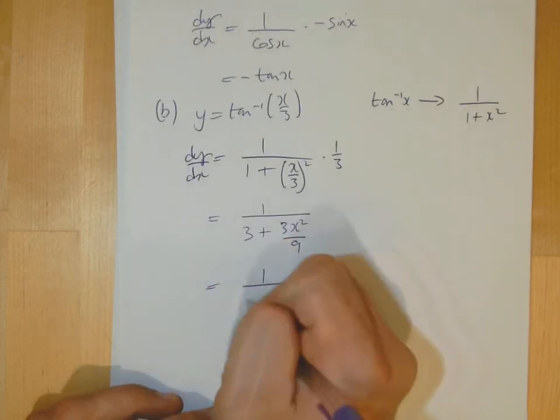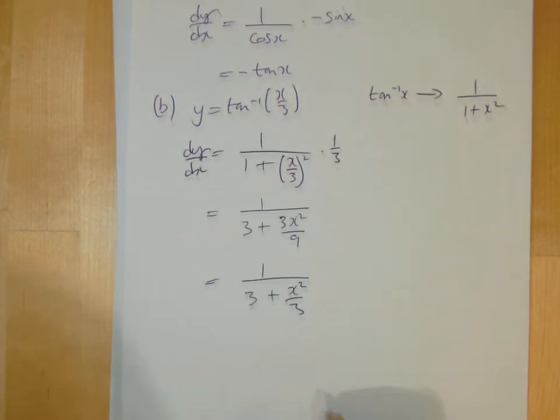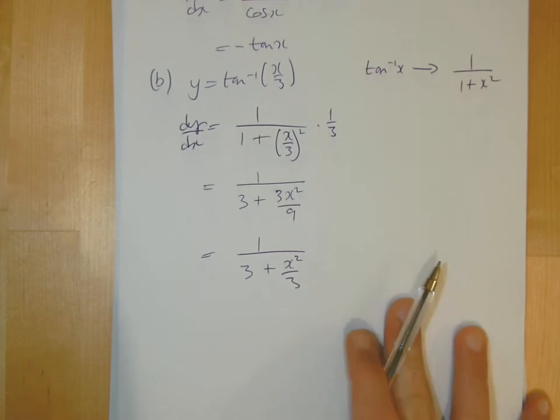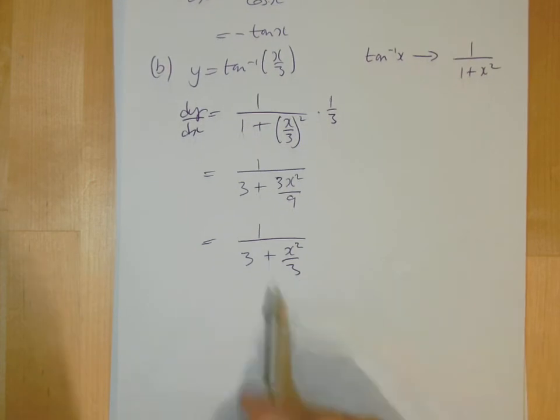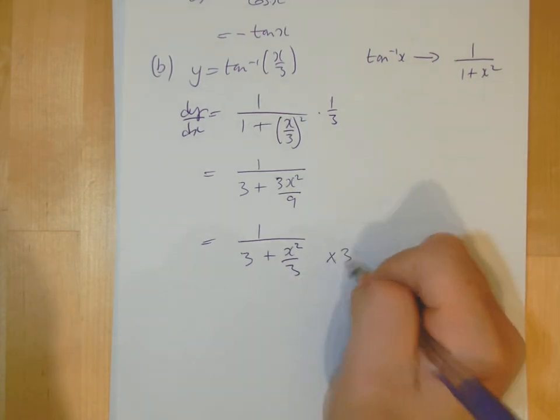So this then simplifies to become 3 over 9 is a third. Now you don't get all marks unless this is simplified properly. You can't really leave a fraction on the inside the fraction. It's not really simplified as best it can be. So when you've got a fraction inside the fraction, what I tend to do is look at what you've got here, and I'll say right, let's just multiply that bottom by 3.